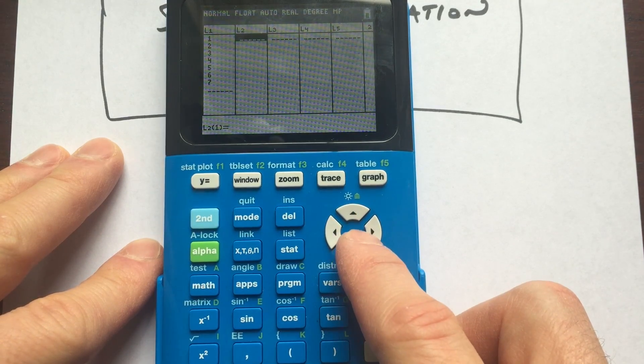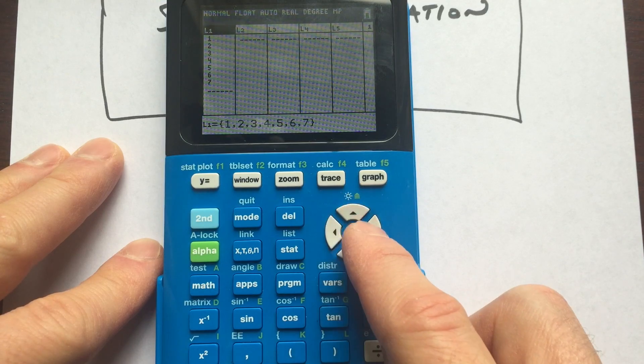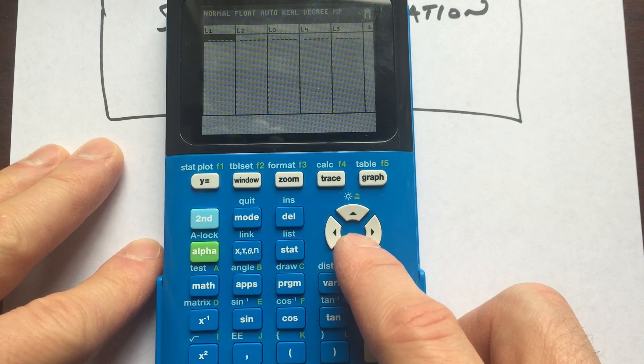When you arrow back down, it's going to clear out that list. I'm going to do the same thing with list one. I'm just going to hit clear. I'm going to arrow down.